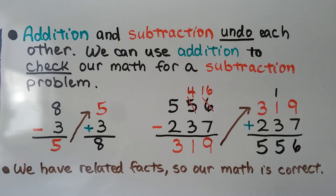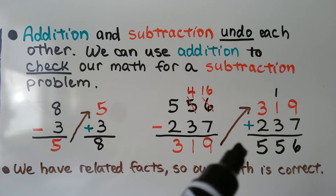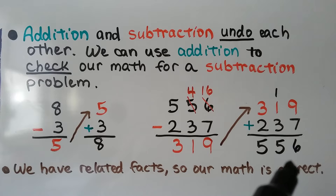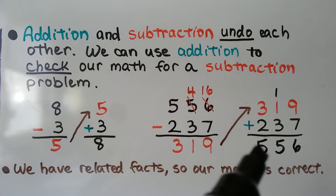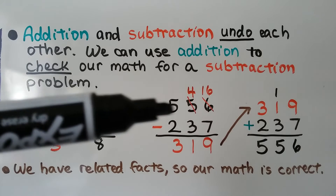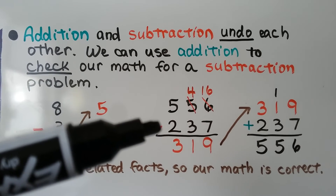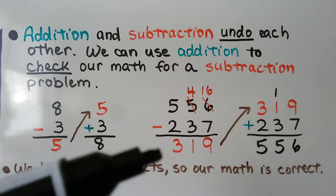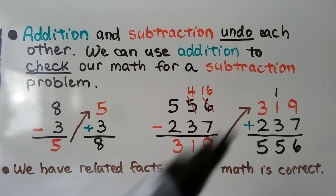We can check our math by adding 319 plus 237. 9 plus 7 is 16 — we regroup the 1 and put the 6 in the ones place. 1 ten plus 1 ten plus 3 tens is 5 tens. 3 hundreds plus 2 hundreds is 500. And we have related facts. We have the same 3 numbers: here's our 556 — that is our sum. Here's our 237 — that is our subtrahend. And our 319 difference becomes another addend.